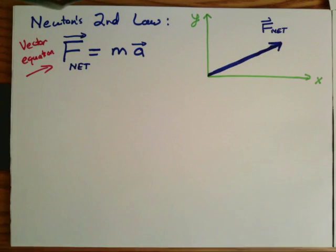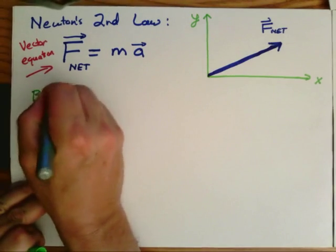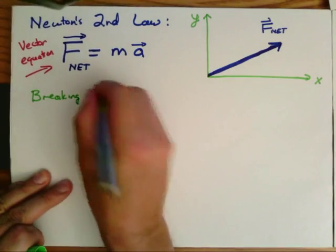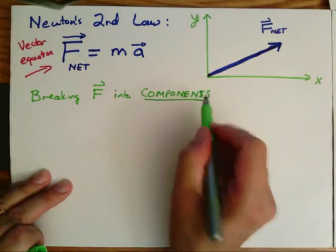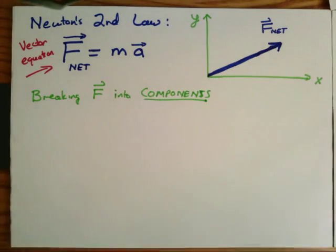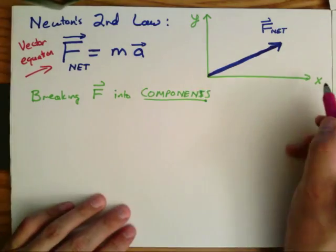So how do I contend with this if I'm going to do a calculation? Our approach is to break F into components. The components are basically vectors that are lined up with the coordinate system.